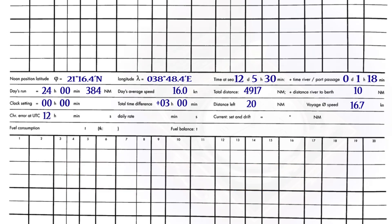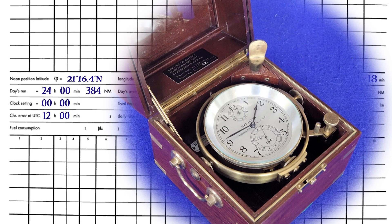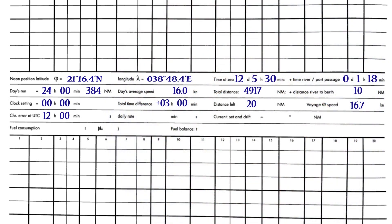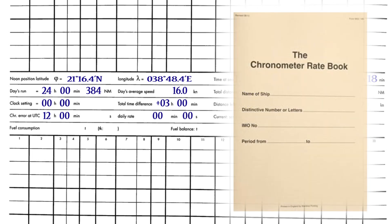Chronometer error at UTC is the time at which the error was determined. Daily rate is the change in chronometer error in 24 hours. Usually entries are made in the chronometer rate book.